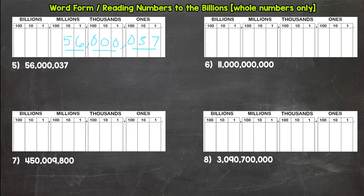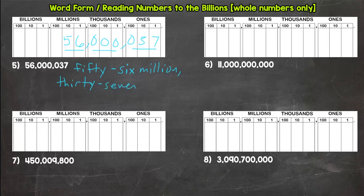Fifty-six million, thirty-seven. That one's not too long there. Although it's a big number, it's not long to say or write in word form. So we're done with number five.